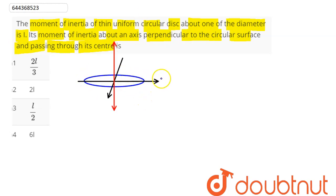So this is our circular disc and about its diameter, this is suppose our x-axis and here this is suppose our z-axis.